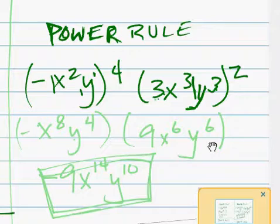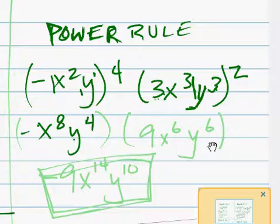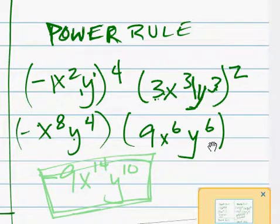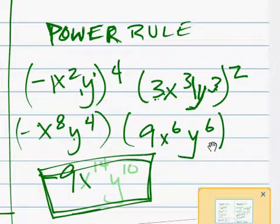So, not to confuse the matter too much, we get negative x to the 8th, and y to the 4th, times... 3 to the 3rd, or 3 to the 2nd is 9. 3 times 2 is 6, 9x. And then y, 3 times 2 is 6. We're going to combine like terms, multiply all of this together. So we're actually going to get a 9x to the 14th, and y to the 10th.